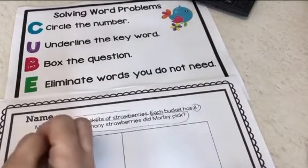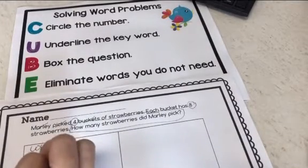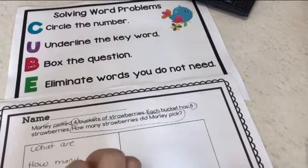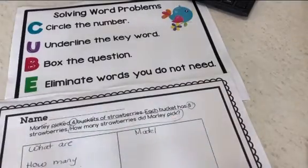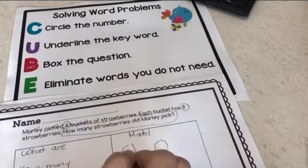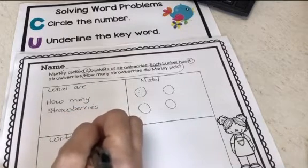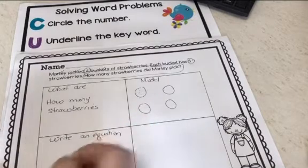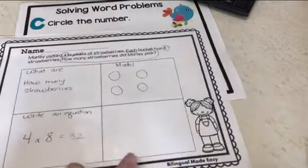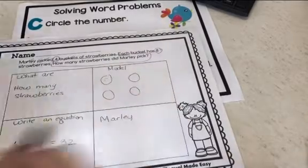We start in the first box and I tell them what they're looking for — how many strawberries did Marley pick. In the next box, I want them to draw a model. For this story, Marley has four buckets and each bucket has eight, so I want them to show me equal groups and draw eight in each group. When we get to the equation box, they're going to write four times eight equals 32. And in the final box, they should be answering the question using a sentence: 'Marley picked 32 strawberries.' And that's how I teach word problems with the CUBES method.